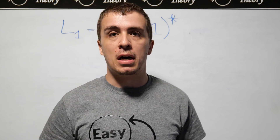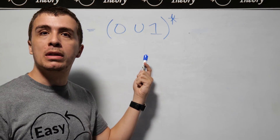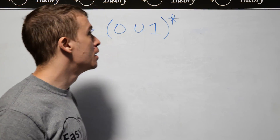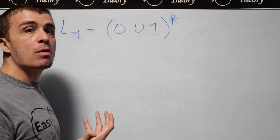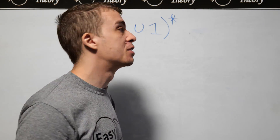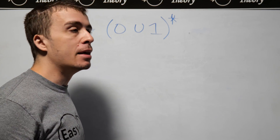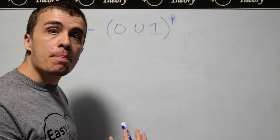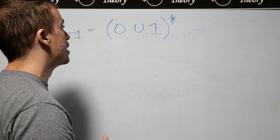The first language we're going to be talking about is zero union one star, which is effectively all binary strings. We have this language called L1, and what we want to make is a context-free grammar for this language. This has every single string in it, so we need to be allowing every possible string in the grammar that we make.